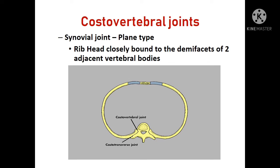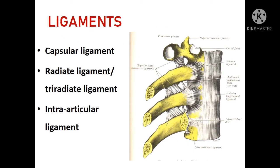The costovertebral joints are synovial joints, plane variety. The head of the rib articulates with the demifacets on the two adjacent vertebrae — the demifacets are on the side of the thoracic vertebra. The ligaments associated with the costovertebral joints are the capsular ligament, radiate ligament (otherwise called tri-radiate ligament), and the intra-articular ligament.